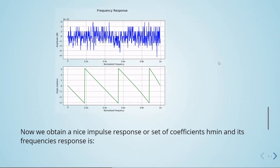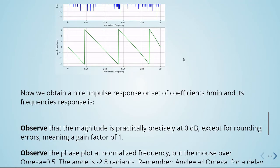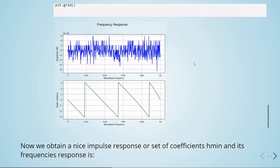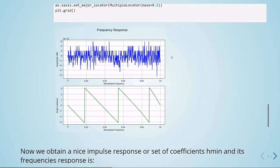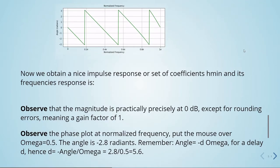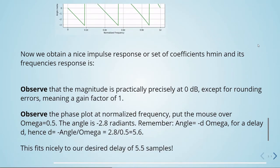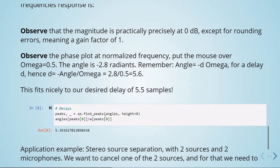We obtain a nice impulse response, a set of coefficients H_min and the frequency response. We have here that the magnitude is practically precisely 0 dB, and this means a gain factor of 1.